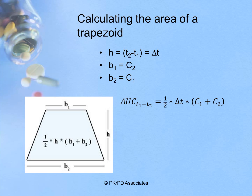The height, in our example, is actually delta T — the difference between time two and time one — and the two bases are the two concentrations. So the AUC from T1 to T2 is one-half times delta T times the sum of C1 plus C2.